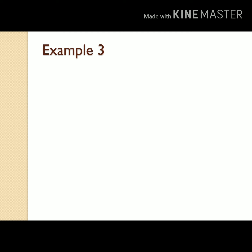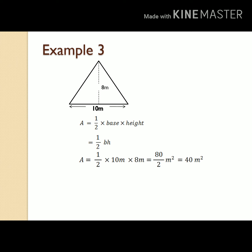Example number three: we have another triangle with dimensions — height 8 meters and base 10 meters. We agreed that finding the area of a triangle we use the formula: area equals one half times base times height. Let us put the dimensions into the formula. So the area equals one half times 10 meters times 8 meters. Eight times 10 is 80, divided by 2 we get 40. Therefore the area is 40 square meters.